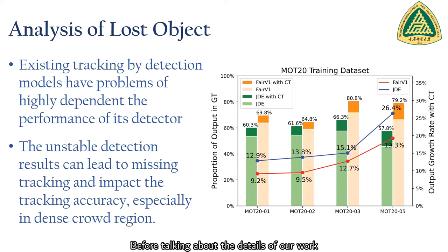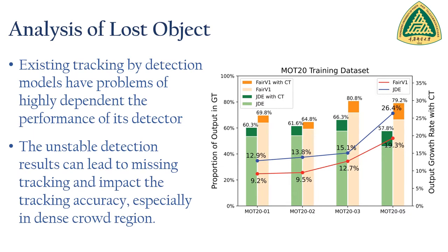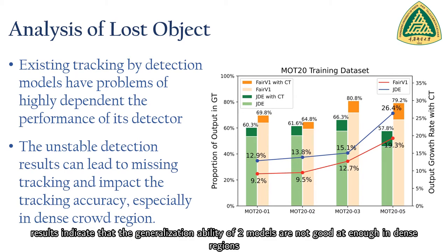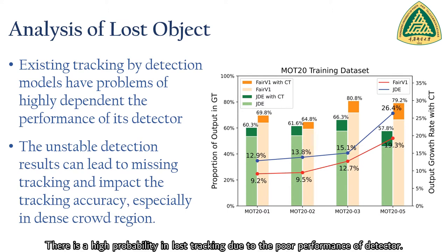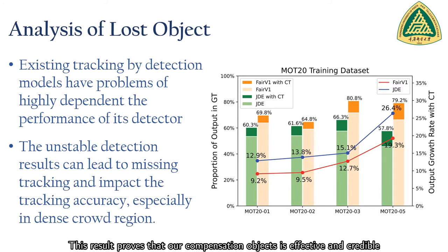Before talking about the details of our work, I want to analyze lost objects. The tracking quantity of two models, FAIR V1 and JDE, accounts for about 60% in ground truth. Results indicate that the generalization ability of these two models is not good enough in dense regions. There is a high probability of lost tracking due to the poor performance of the detector. Results prove that our compensation objects approach is effective and credible.